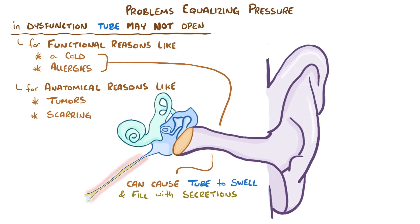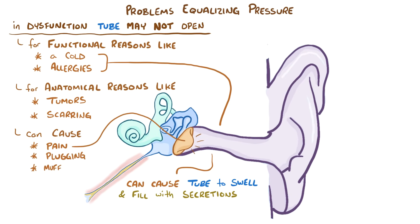Regardless of the cause, difficulty balancing out pressures can cause pain from stretching of the tympanic membrane, as well as make the ears feel plugged and muffled. And if the inner ear gets affected, it can also cause problems with balance.